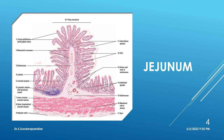Villi are present, and you can make out the plica circularis. Now see the submucosa — if there are no glands, that is the slide of jejunum. In the lining epithelium there will be more numbers of goblet cells. In the muscularis externa you have the inner circular and outer longitudinal muscle coat, with myenteric nerve plexus in between. Then you have serosa.